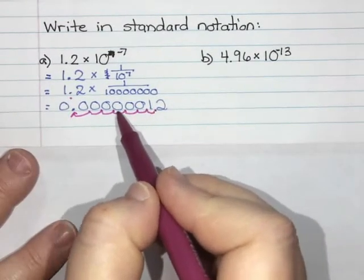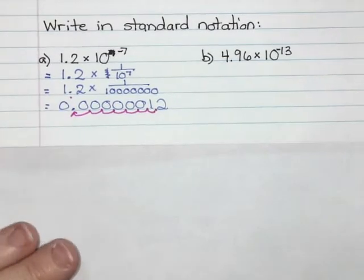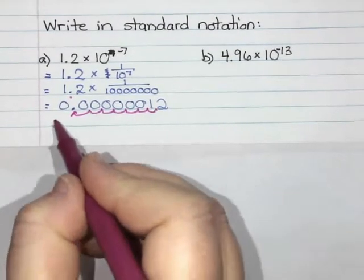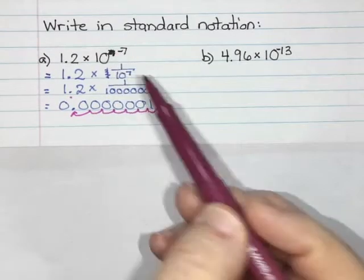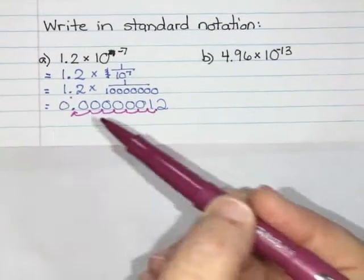So from here, from where the decimal point was, it was right after the 1, I moved it 7 spots to the left, which is the shortcut. Now I remember that I should move it 7 spots to the left because it is a negative exponent, and negative numbers go this way, right? And if it's a positive exponent, positive numbers go that way on a number line.